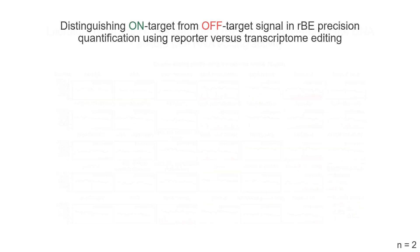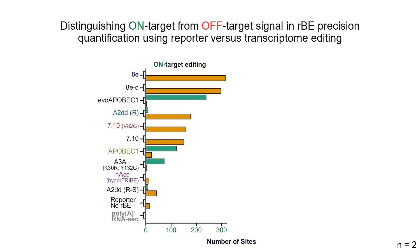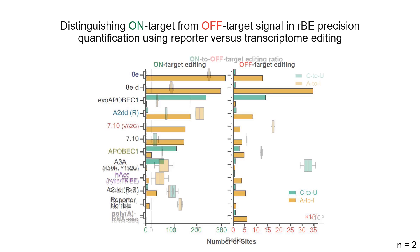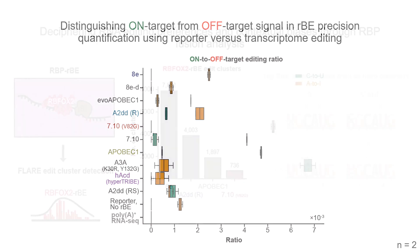To assess the precision of the RBEs, we performed total poly-A RNA sequencing and differentiated between on-target and off-target edits for a selection of top-performing RBEs from the initial screen. Given that MS2 hairpins and GFP are foreign to human cells, on-target editing is quantified by edits on the reporter, contrasted against edits within the human transcriptome, which are considered off-target. This comparison yields a ratio indicative of each RBE's precision, factoring in its unique catalytic profile. As with the reporter profiles, we observe a wide range of on-to-off-target editing ratios.